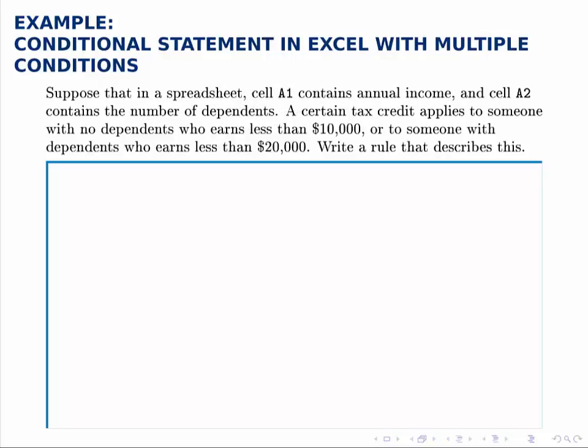Then there's a rule given for a tax credit. The tax credit applies to someone with no dependents who earns less than $10,000, or to someone with dependents who earns less than $20,000.